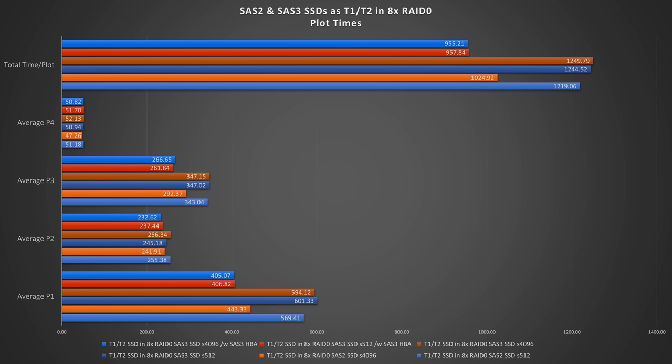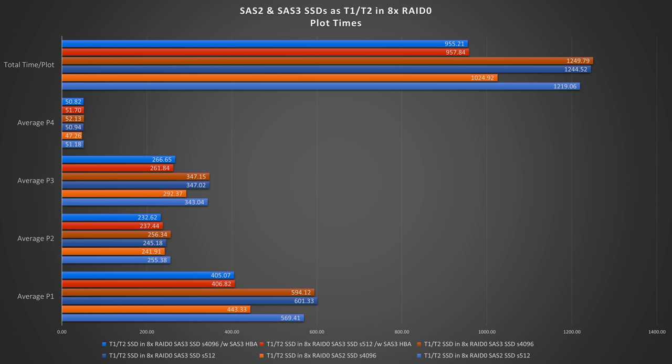And immediately it looks a lot better. It still looks really weird that it's so slow with a SAS 2 HBA. Other than that, it's really good results — mind you, this is completely without a RAM disk, this is just the SSD nothing else. It does look really weird with 1250 seconds running with a 4k sector size, and it's also weird that the 512 is faster than the 4k — I did not expect that.